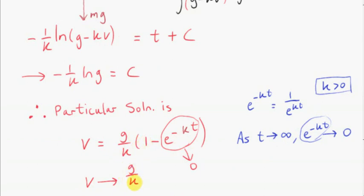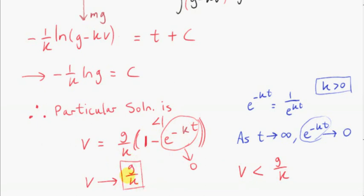As t approaches infinity, e to the minus kt approaches zero. For very large times, this quantity will be practically zero. So the velocity v is approaching g over k times one, which is g over k. This is the terminal velocity. We see that v is always less than g over k, because inside the brackets we have a number less than one — g over k times a number less than one. As time goes on, v gets larger and larger, approaching but never reaching g over k.